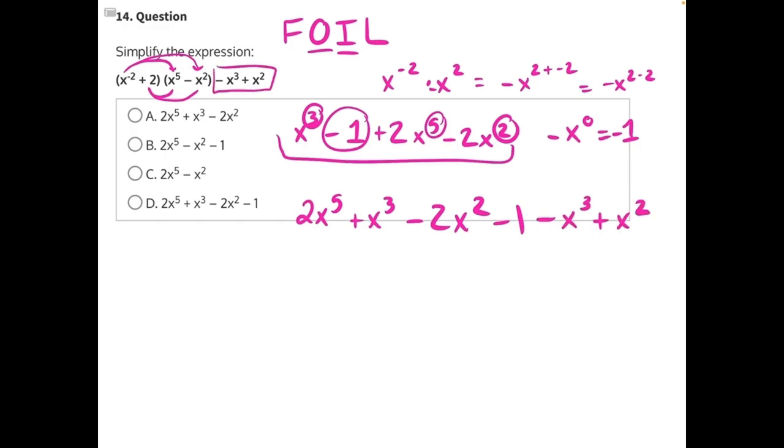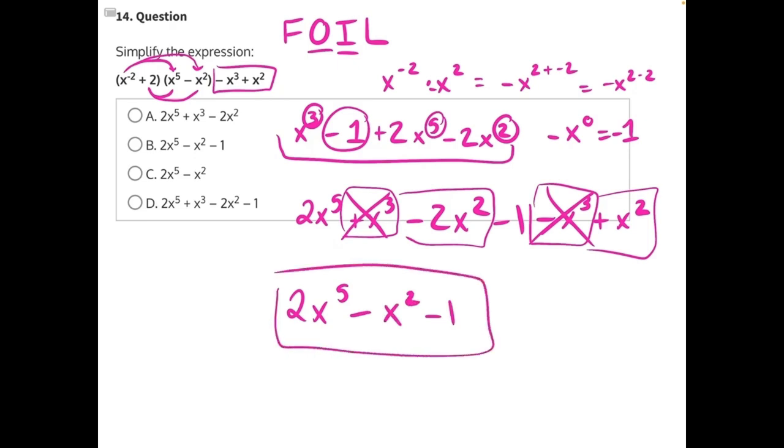And then we do have like terms that we can combine. We have a positive x to the third and a negative x to the third. These are complete opposites and will cancel each other out fully. Then we have our negative two x squared and our positive x squared. This will give us a negative one x squared which is just the same thing as negative x squared. So this will end up being our final expression which matches answer choice B.